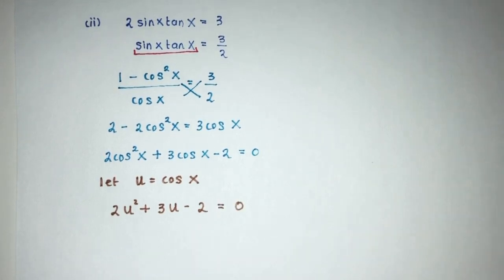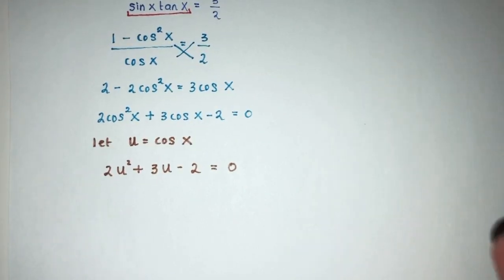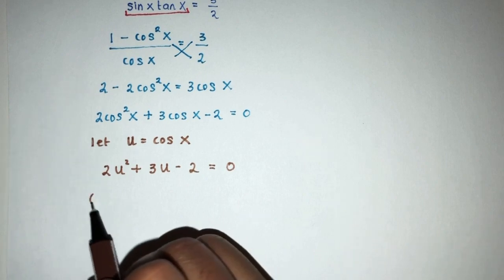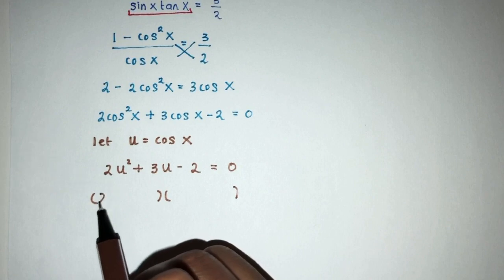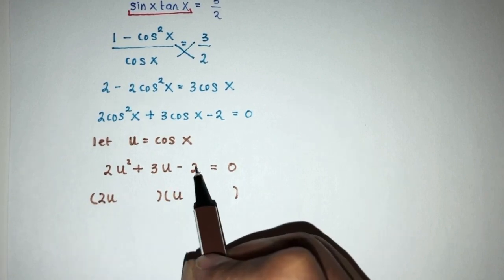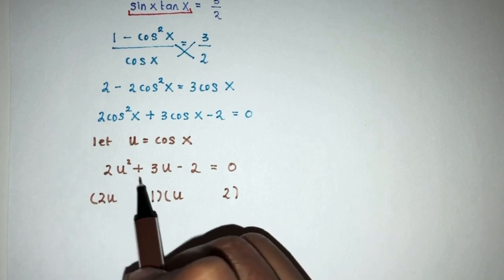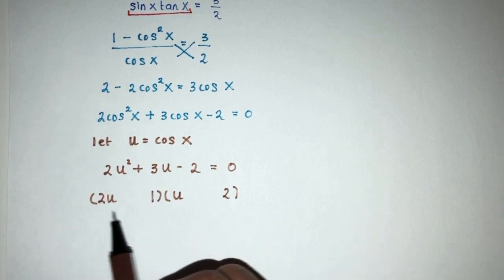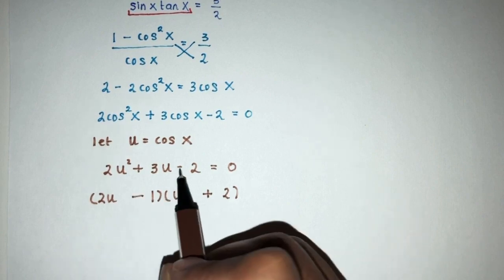Now as you can see, this one will be a simple quadratic equation. You can solve using factorization or you can solve using the formula. So I will use factorization because I like doing that way. You will have 2u square is 2u times u. 2 is 2 times 1. Okay, I put 2 here and 1 here. We want to have plus 3, so 2u times plus 2, only plus 4, minus 1, that will be plus 3.